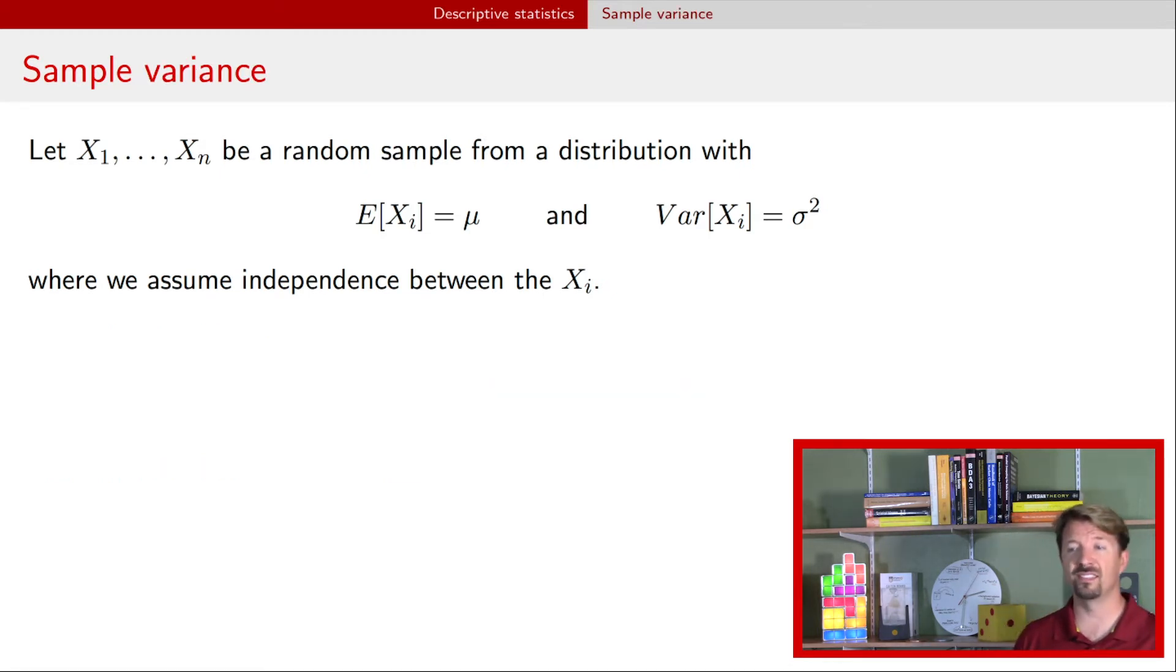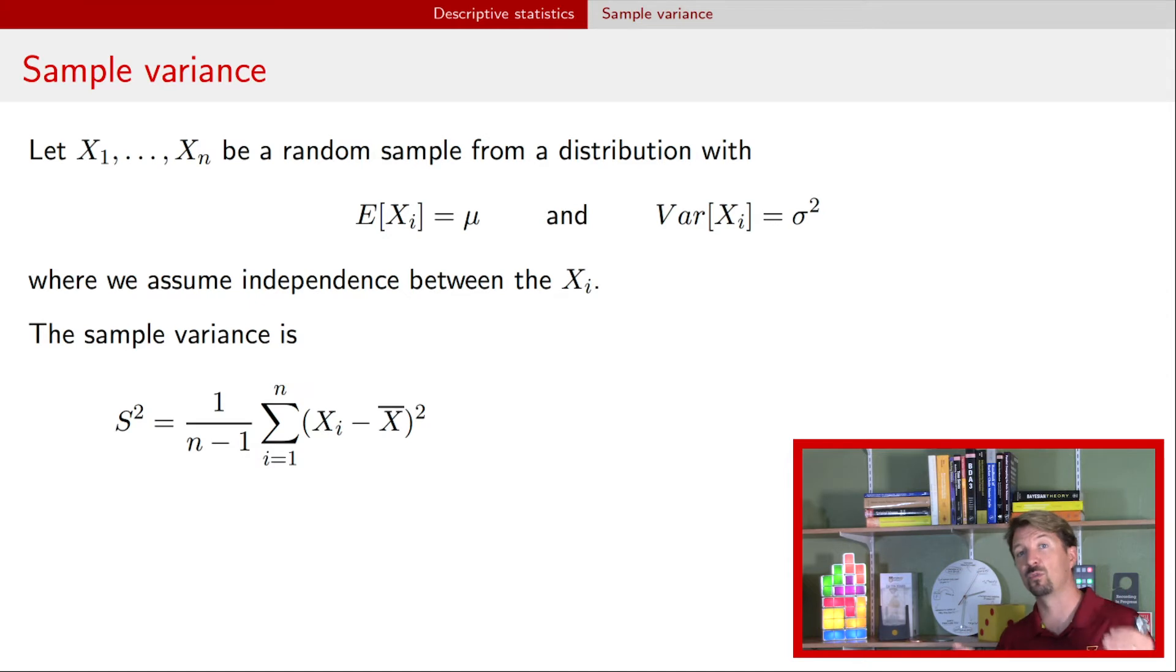We can do another one. We can do the sample variance. So we have the same exact setup, but now instead of the sample mean, we will calculate the sample variance. The sample variance is right here. Oftentimes, this is denoted capital S squared. Here we have out in front the ratio one over n minus one. So this is something you have to remember if you're trying to calculate the sample variance as opposed to the sample mean. The sample mean just had one over n. The sample variance has one over n minus one.